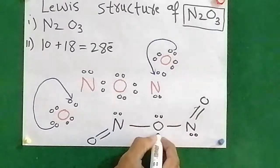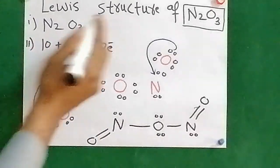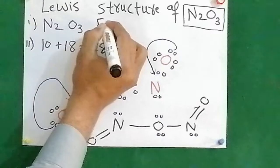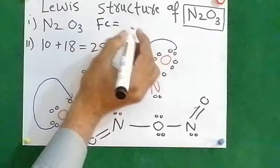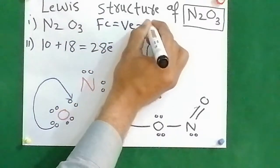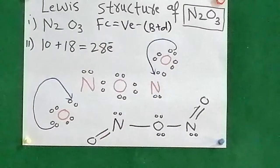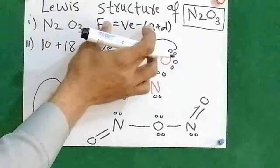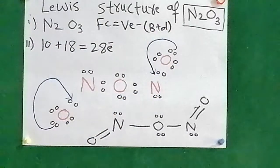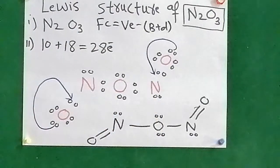In a similar case, students can determine the formal charge. The formula is: Fc = valence electrons minus (bond electrons plus dot electrons). By using this, students, you are able to determine the formal charge on every atom.